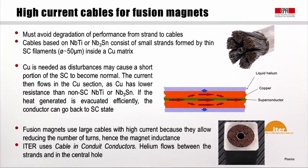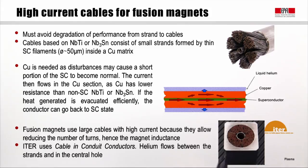Fusion magnets always use very large cables carrying large currents — not just large current densities — to reduce the number of turns and hence the magnetic inductance. ITER uses a concept called Cable-in-Conduit Conductor (CICC), in which helium flows both between the strands in the voids and in a central hole in the conductor. The surrounding conduit is made of stainless steel for mechanical stability.